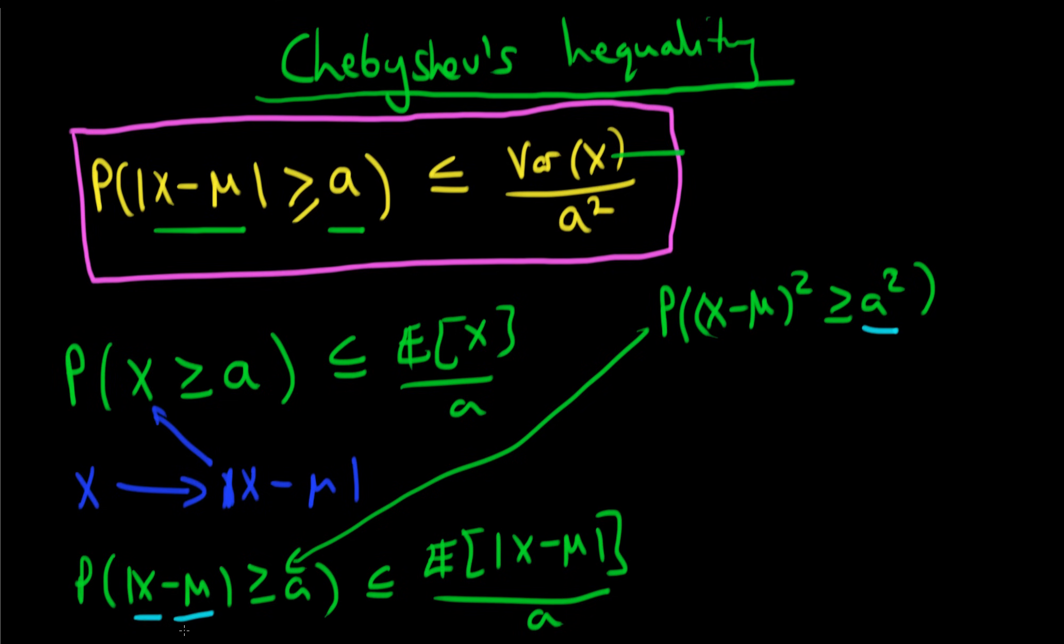but the absolute value of that is greater than or equal to a, then when I square that, the absolute value of that is going to be greater than or equal to a squared. And obviously that's going to hold true as well if x is greater than μ. That's a trivial case. So yeah, these two probabilities are absolutely identical.